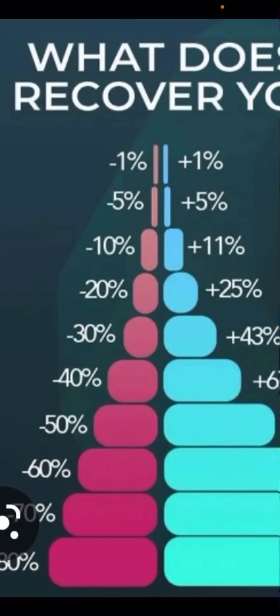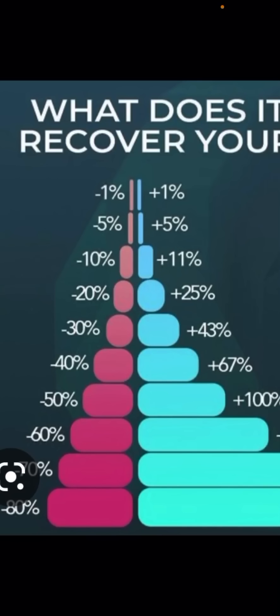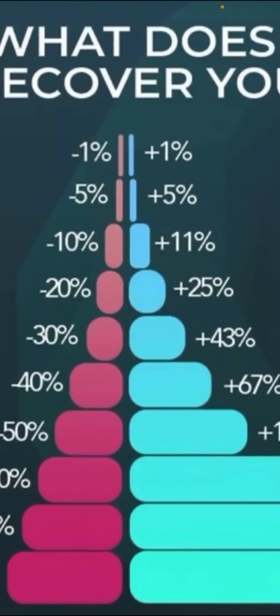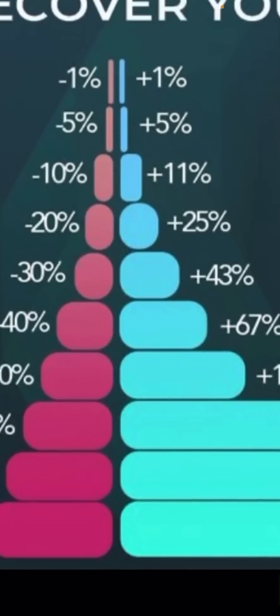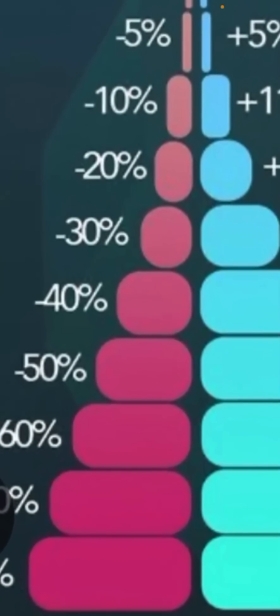If you're down 10%, you need 11% to get back to even. If you're down 20%, you need 25% to get back to even. 30%, you need a 43% recovery. If your stock's down 40%, you need a 67% recovery. If your stock's down 50%, you need a 100% recovery, guys. That's a big ask. That's hard to do.